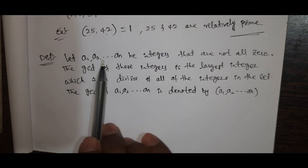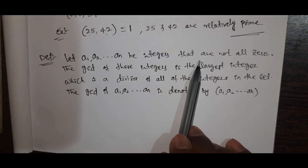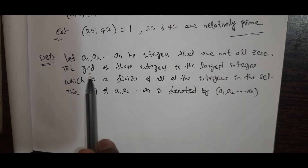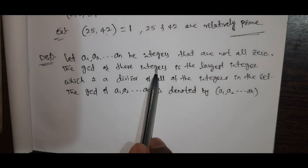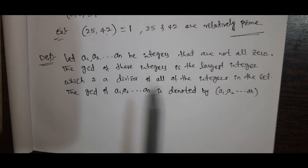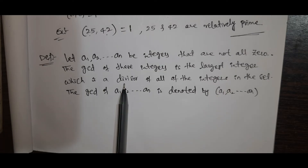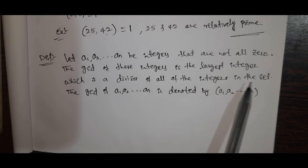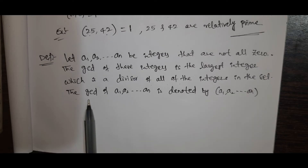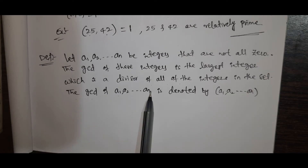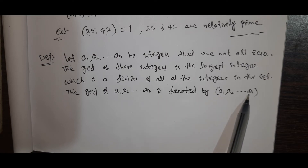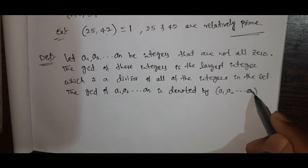Let A1, A2, so on, An be integers that are not all zero. The GCD of these integers is the largest integer which is a divisor of all of the integers in the set. The GCD of A1, A2, so on, An is denoted by GCD(A1, A2, ..., An).